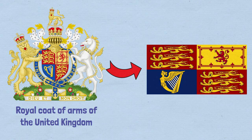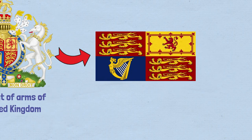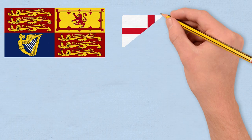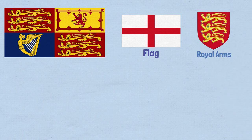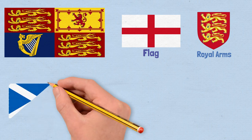The flag is divided into four quadrants. The first and fourth quadrants feature the banner of arms of England. They represent both the historical Kingdom of England, as well as the current constituent of England within the United Kingdom.